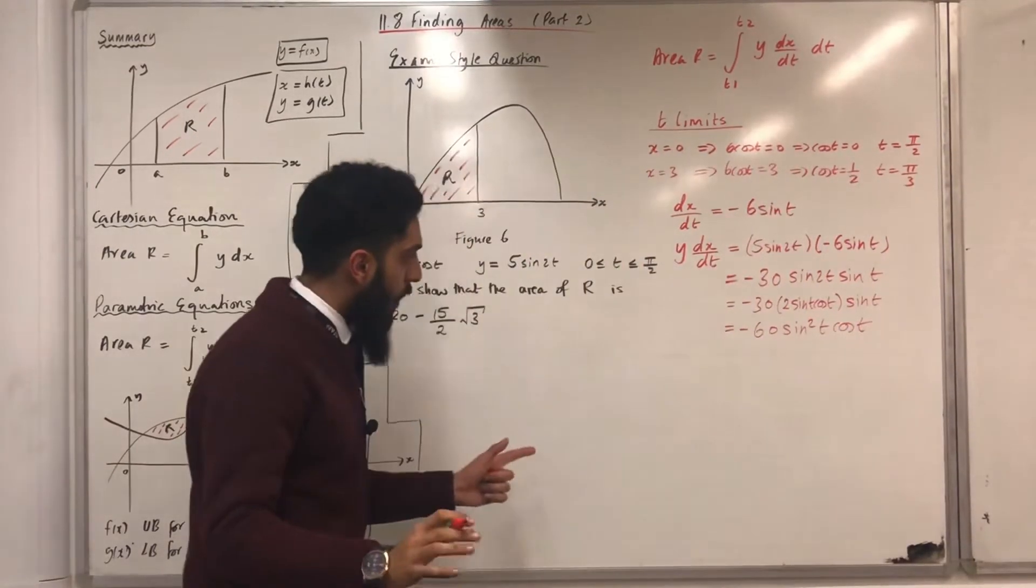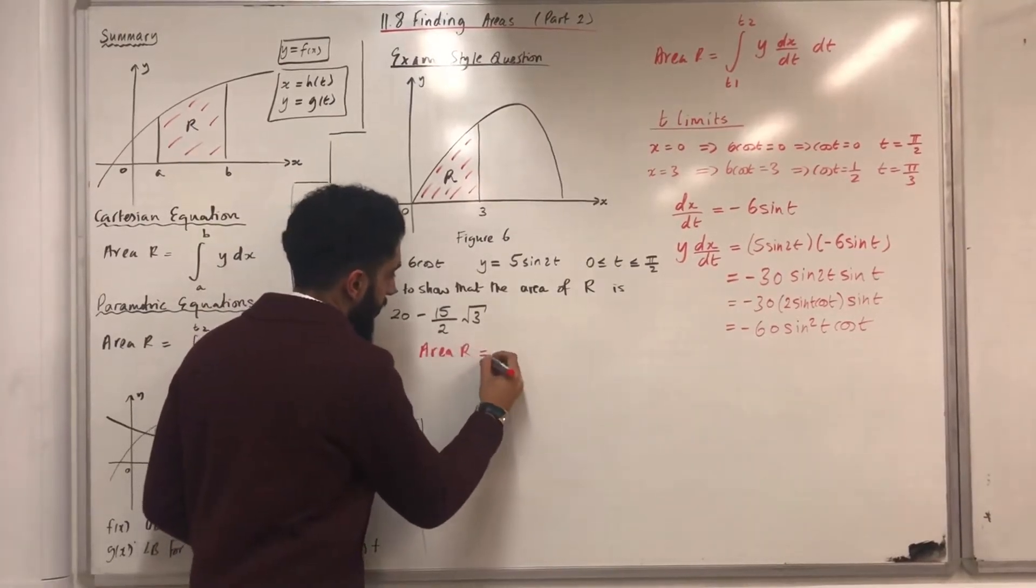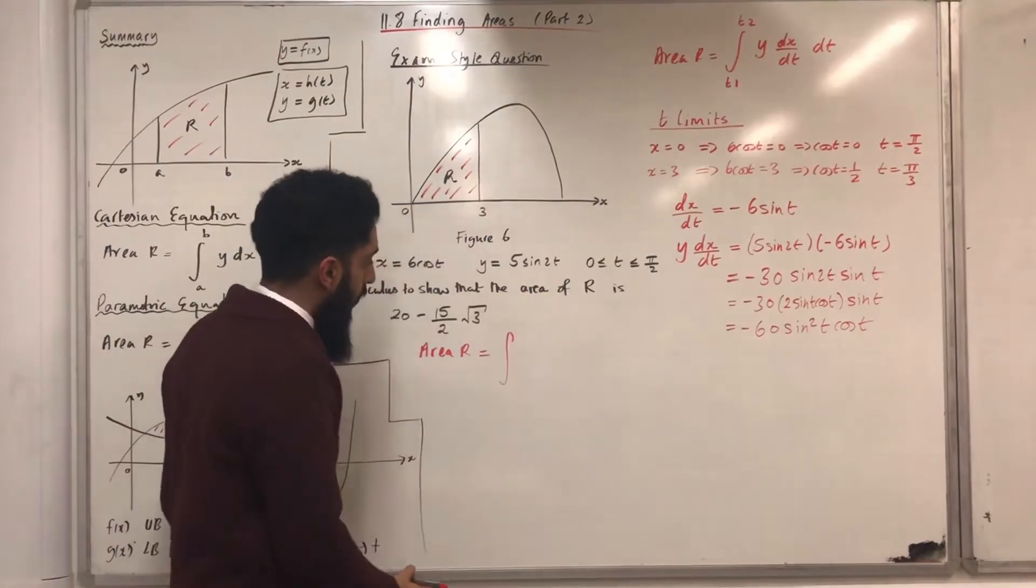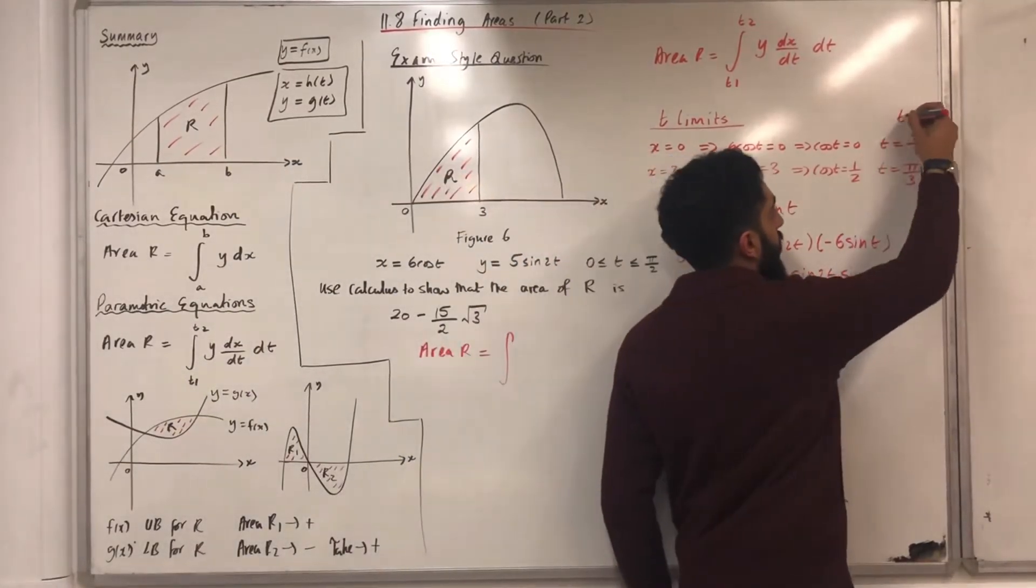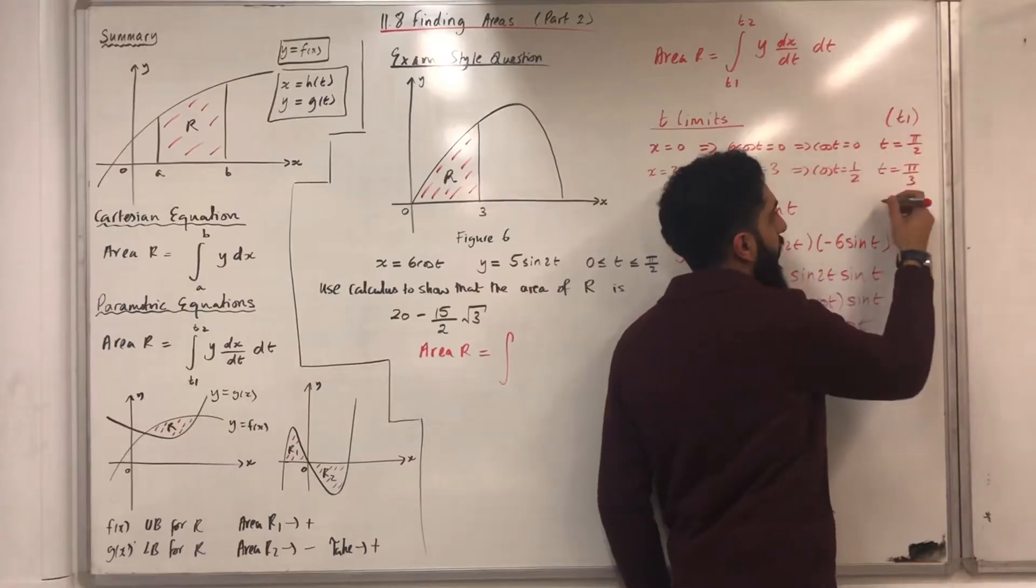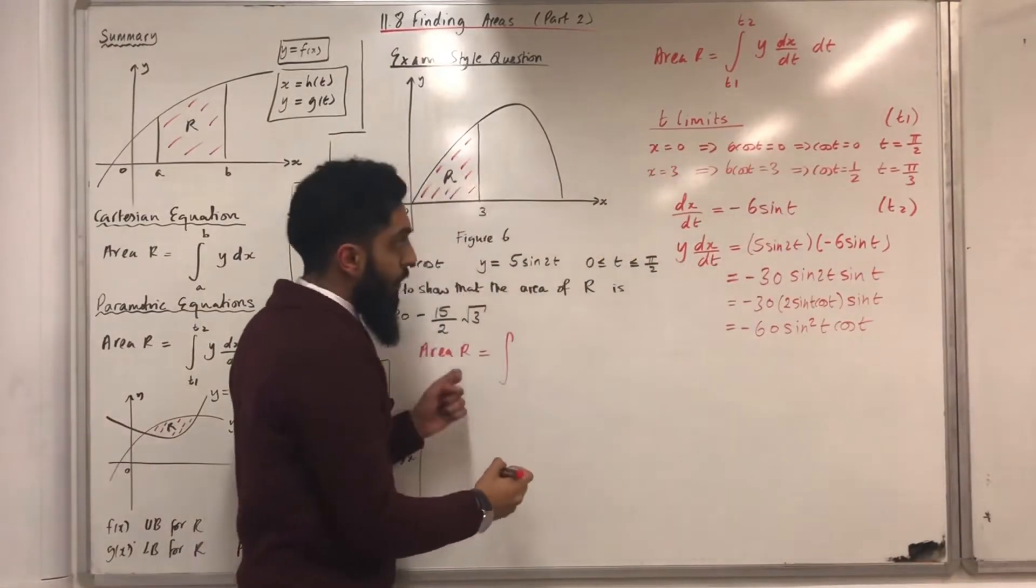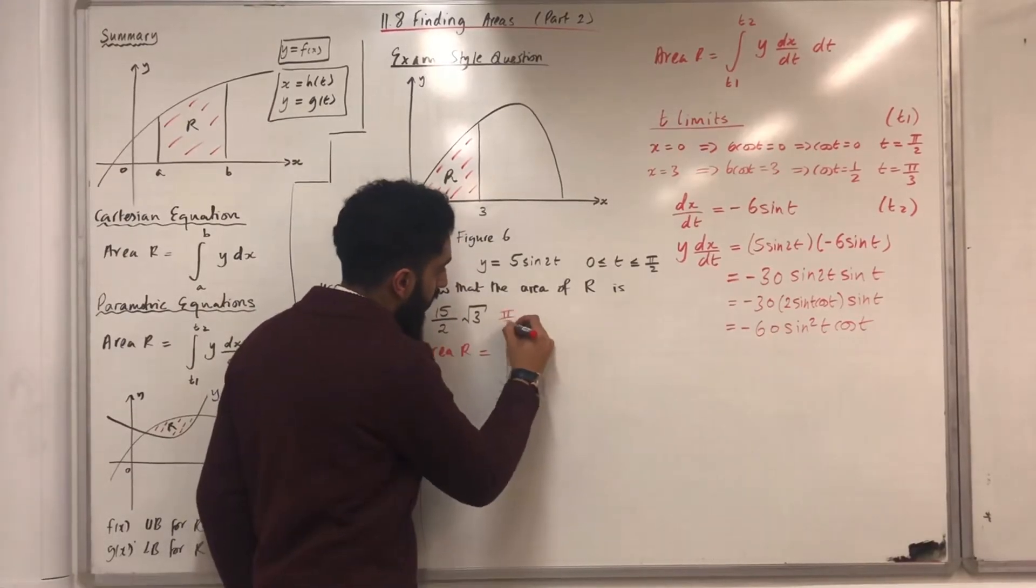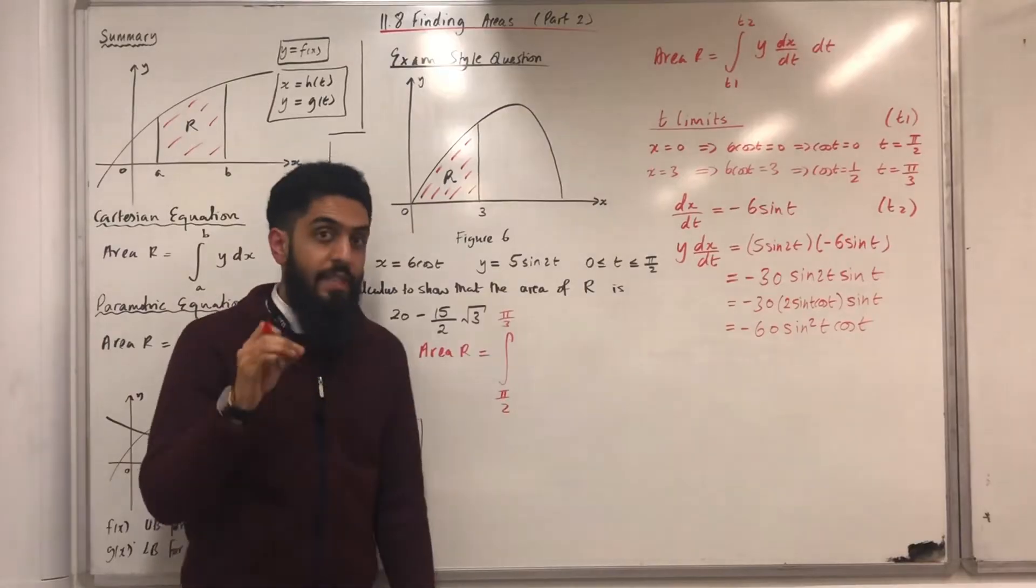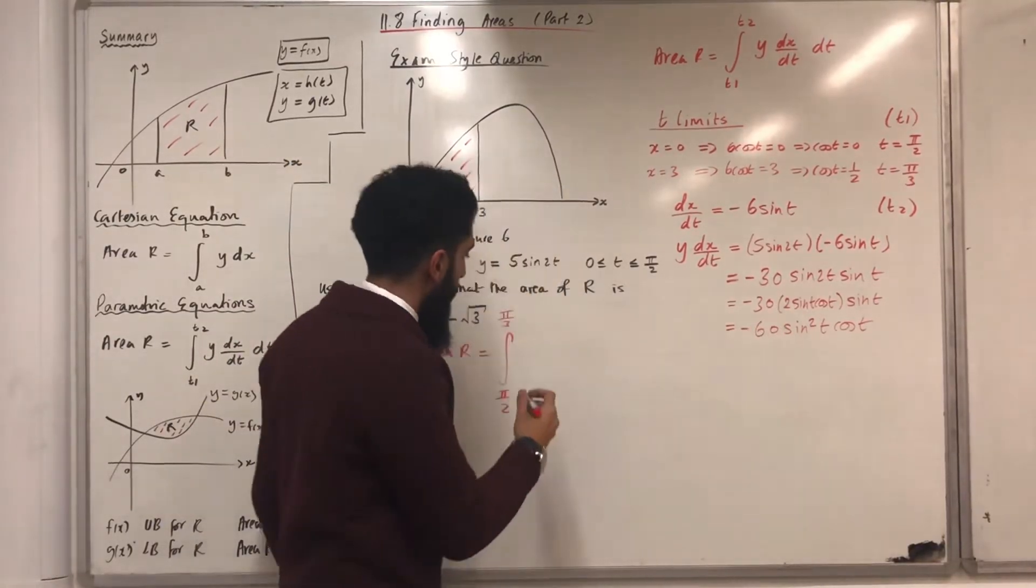Okay, now, the area R is given by the integral from t1 to t2. t1 represents this limit, t2 represents this limit. So, the integral from pi over 2 to pi over 3 of y dx over dt, which I've calculated to be minus 60 sin squared t cos t dt.